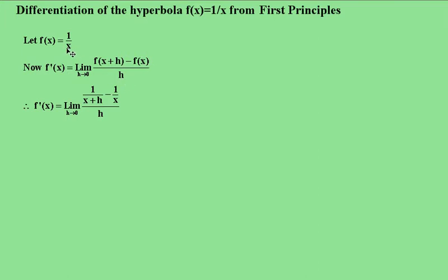So simply replacing the x with x plus h in the first bit, we get this result: 1/(x + h) minus 1/x all over h.